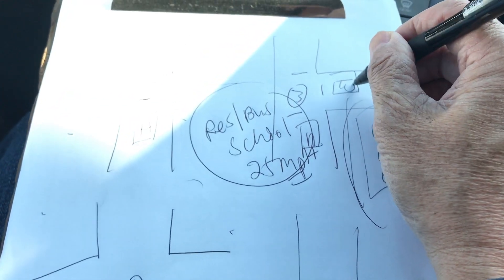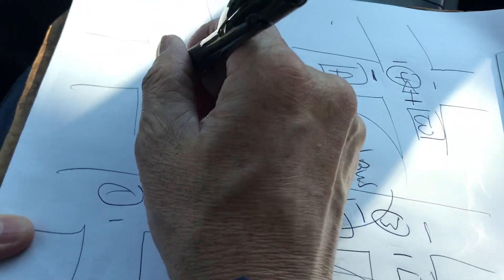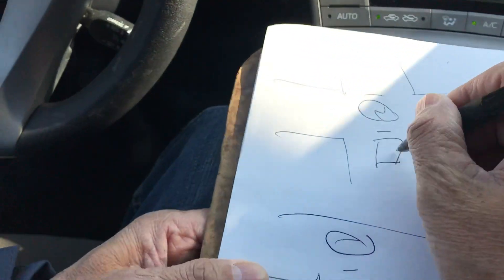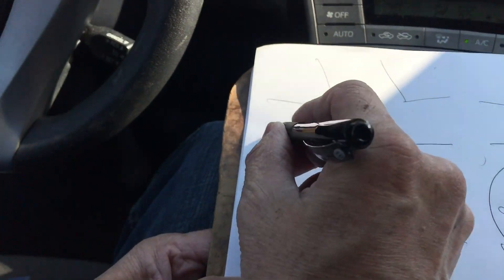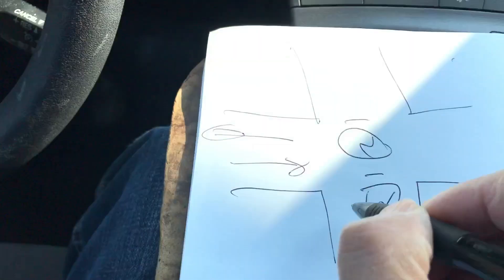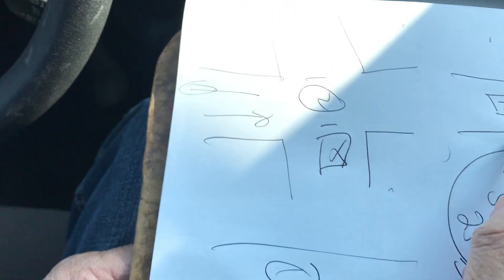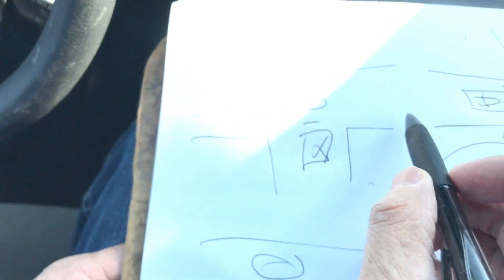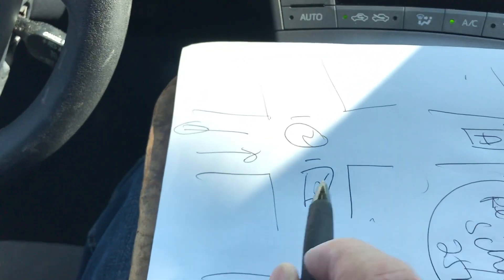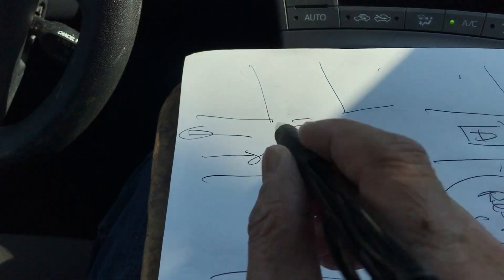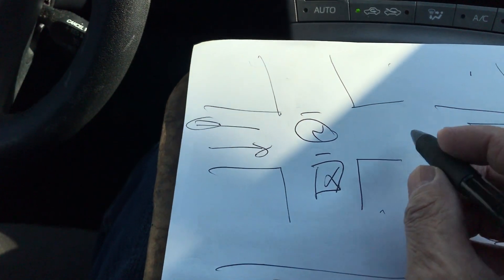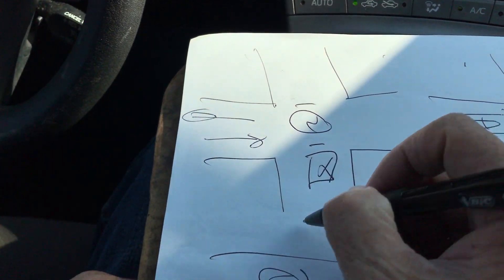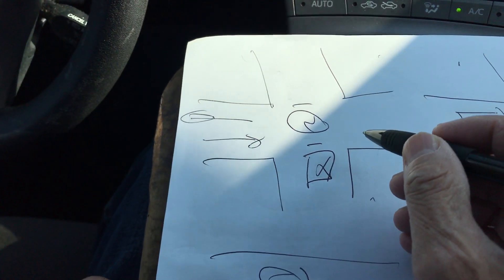Everybody at a four-way stop is supposed to stop. But what if you are at a two-way stop? You stop, then you scan, and you realize there are only two stops here. You have to yield the traffic — make sure it is clear and safe, 110 percent sure. If it's safe and clear, then you can go.